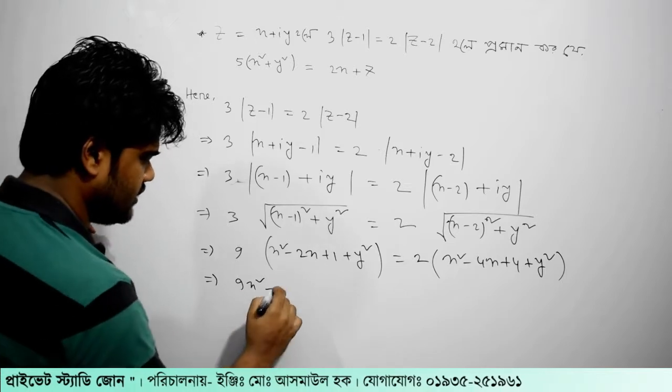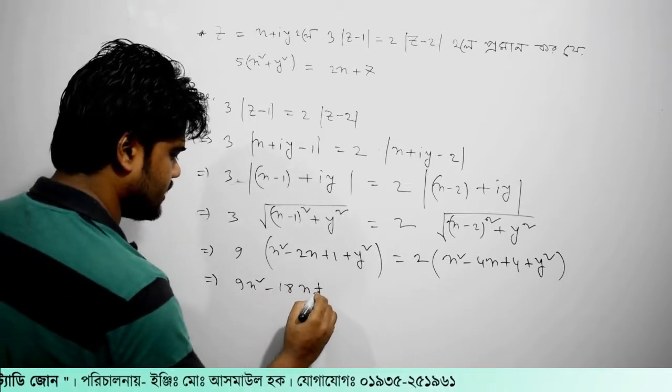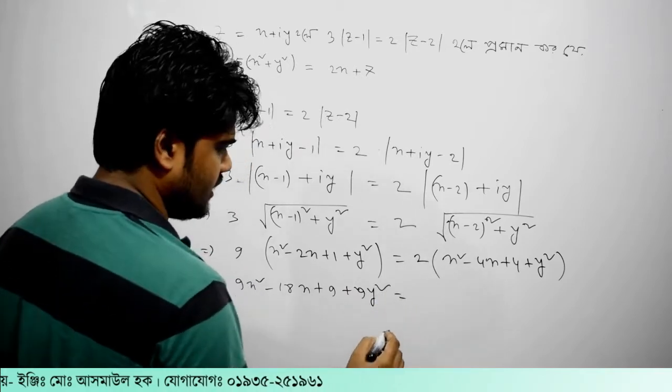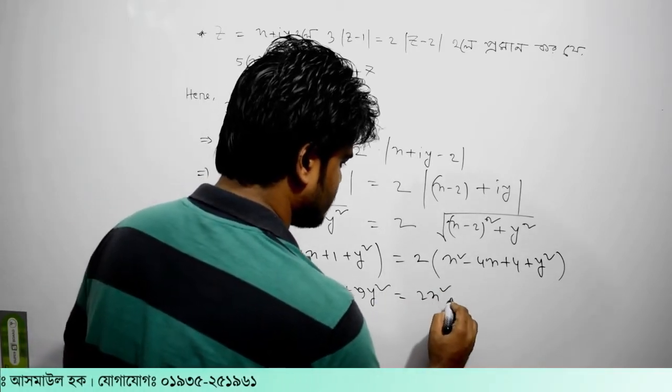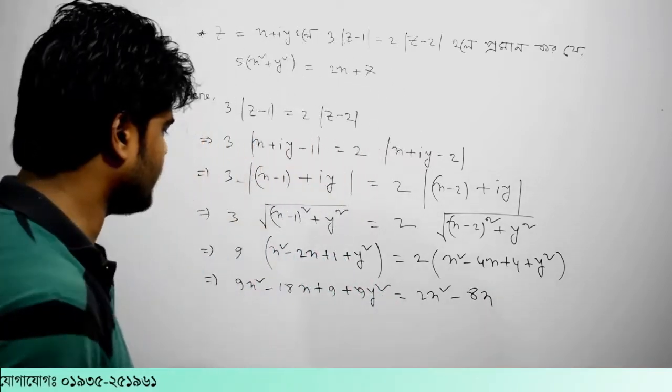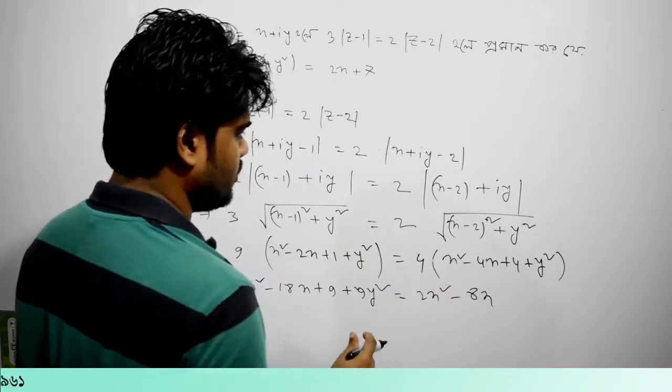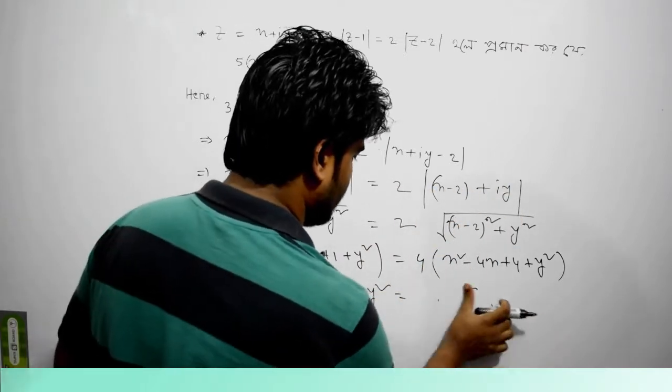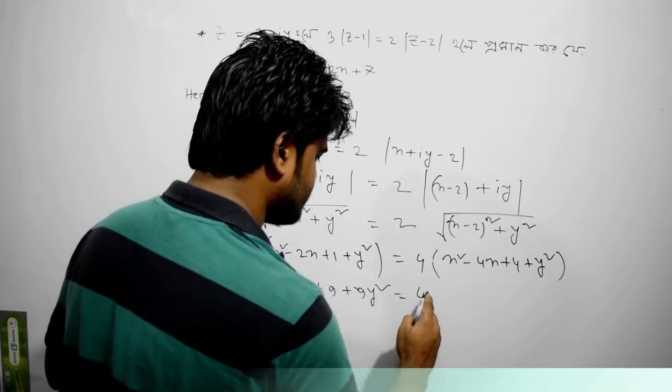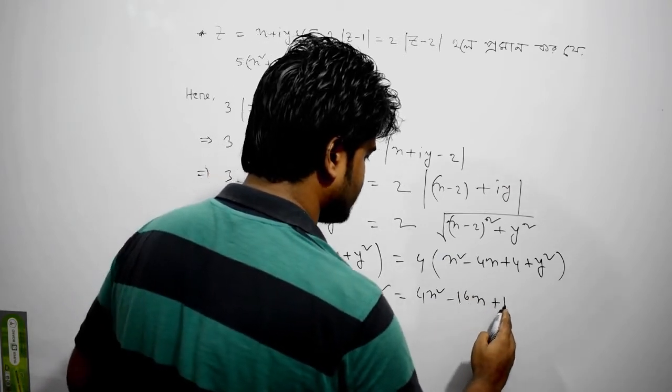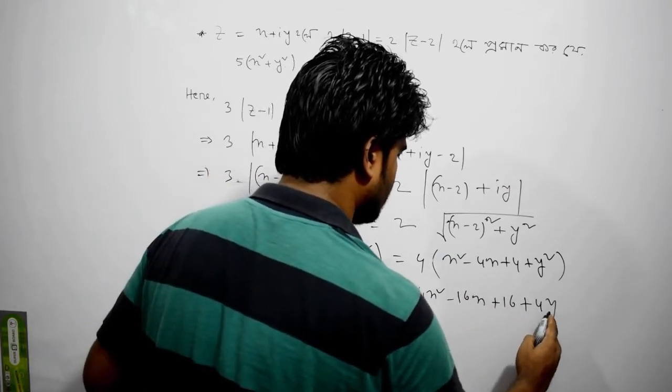9x square, then 8x plus 9 plus 9y square. And here, 2x square minus 8x. Here the data is 4x square minus 4x plus 4y square.